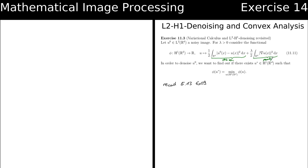The penalty term in the denoising part is responsible for creating a smooth image. Smoothing was one way to denoise an image, but if you smooth too much you lose information. Therefore we also have this data term so we do not get too far apart from our original image u₀.